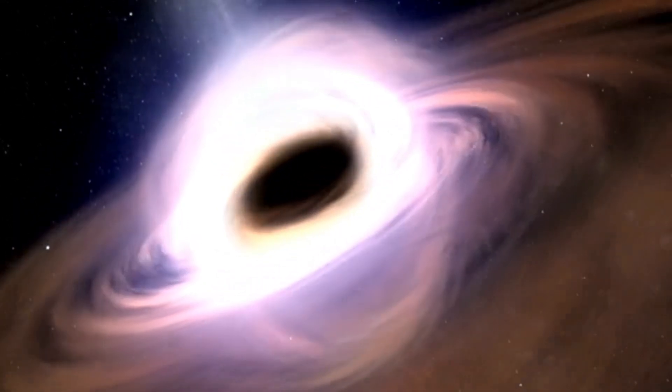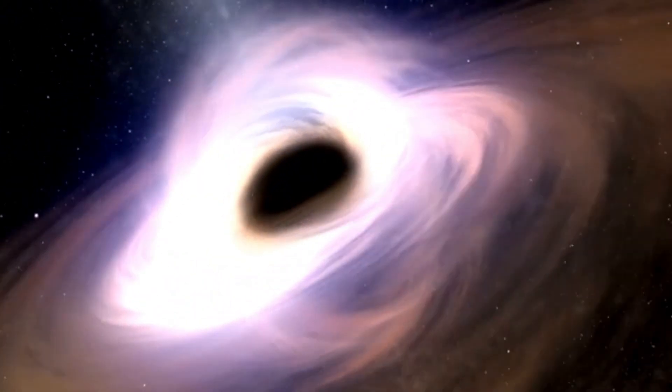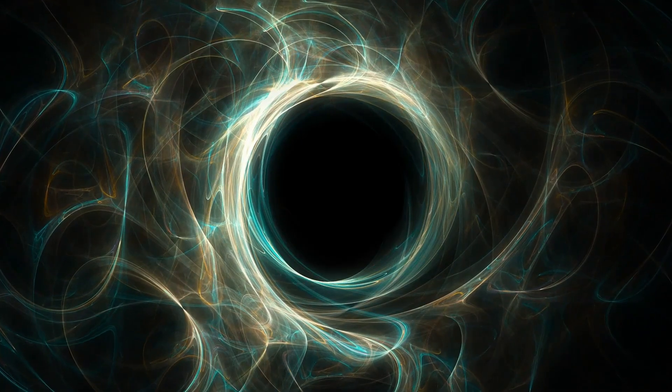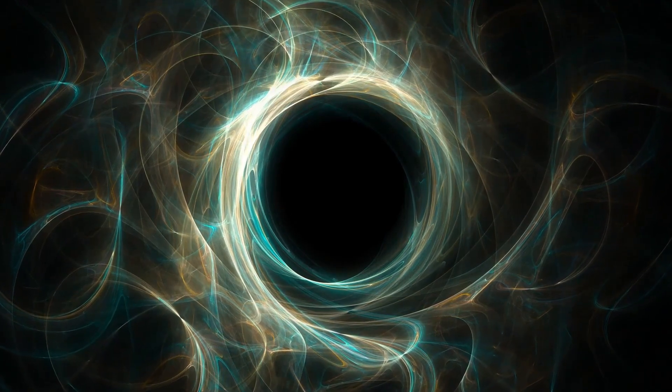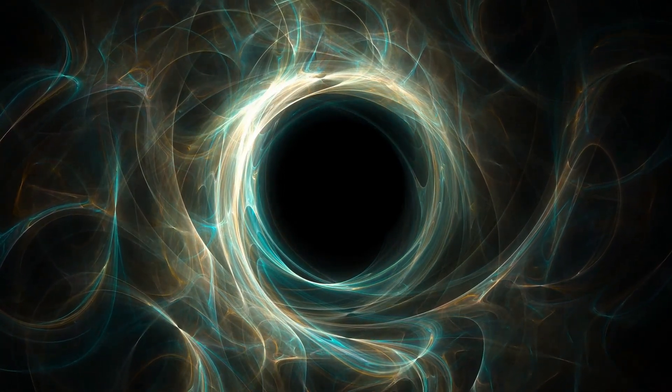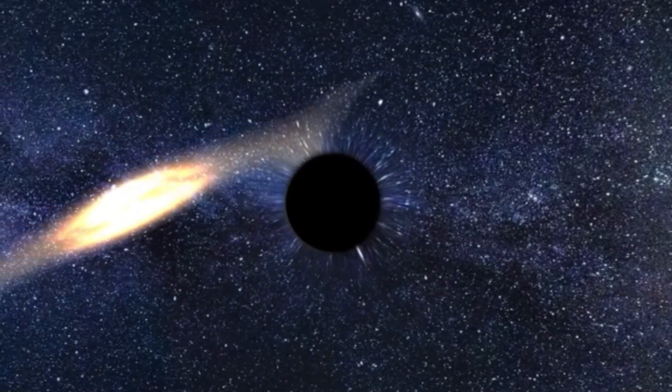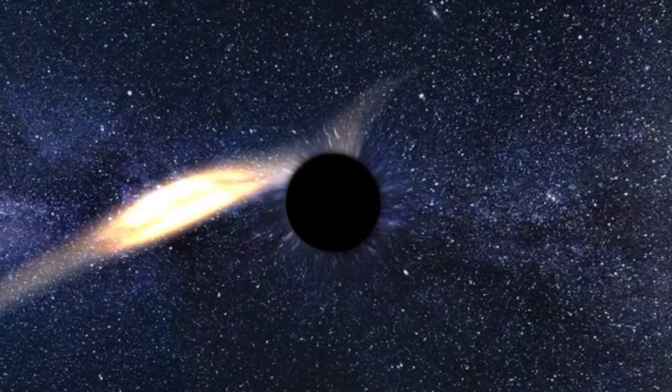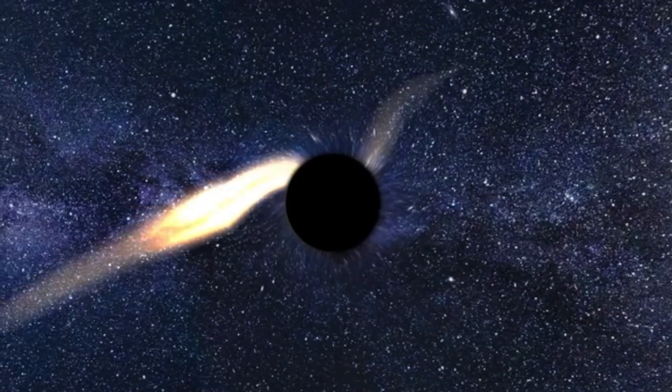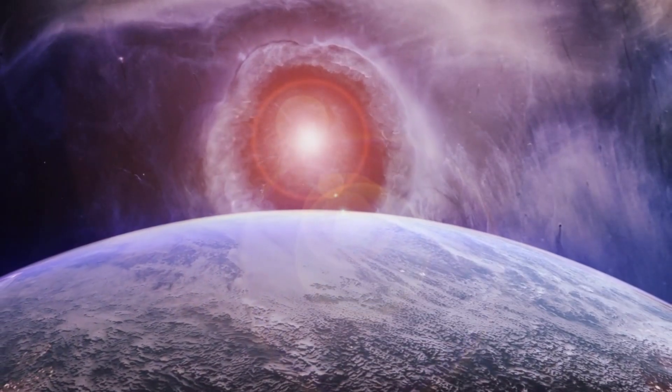Despite their invisibility, their presence is evident through their profound impact on surrounding matter. Some black holes are encircled by swirling disks of gas and dust, emitting vast amounts of radiation and earning the title of quasars, the universe's dazzling entities. But how do these mesmerizing phenomena form?